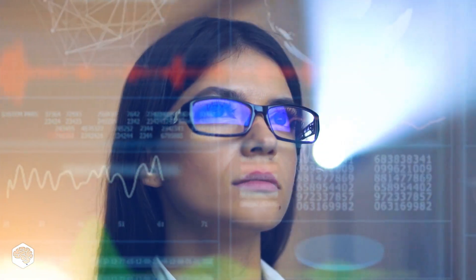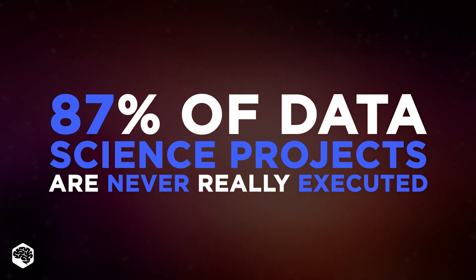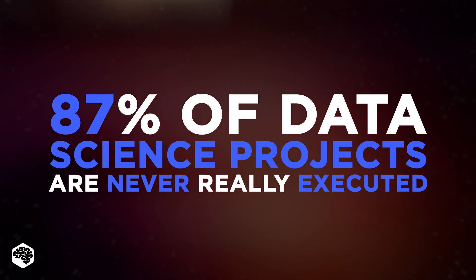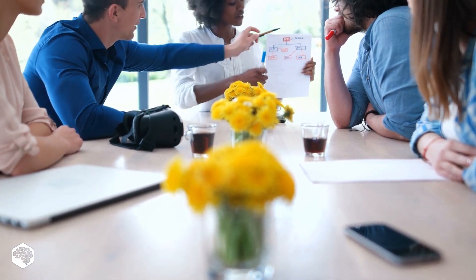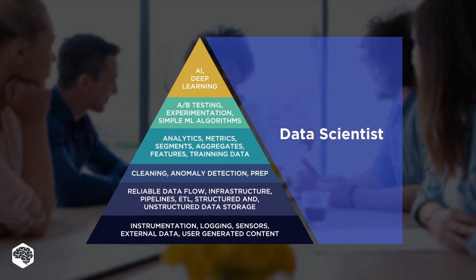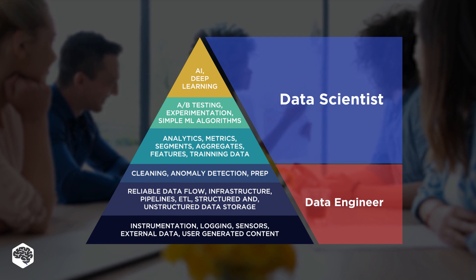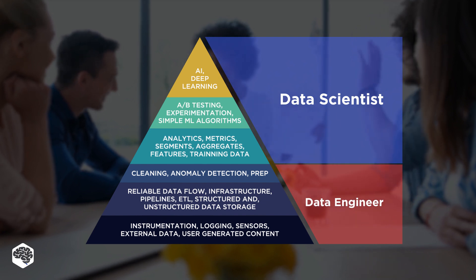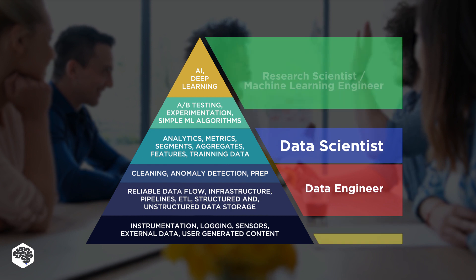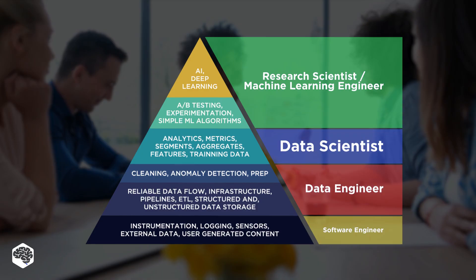Why should we distinguish between data engineers and data scientists? Well, 87% of data science projects are never really executed, mainly due to the market's inability to distinguish between data scientists and engineers. These positions, however, are bound, and team members can step in and perform tasks that technically belong to the other role. Actually, your team composition largely depends on the size of your team, so everything we'll cover in this video obviously doesn't concern early-stage startups and small companies.